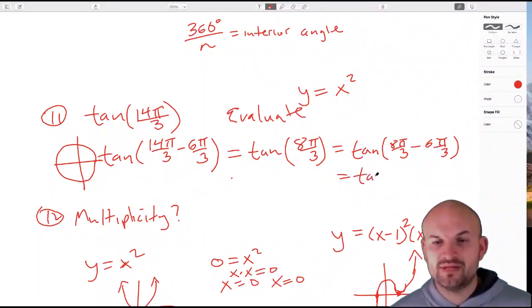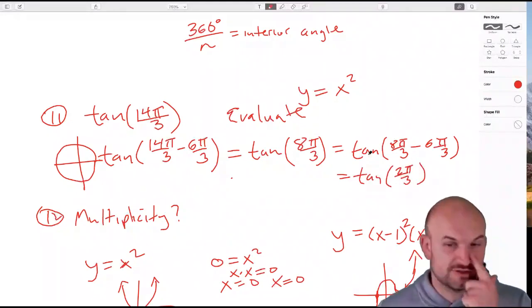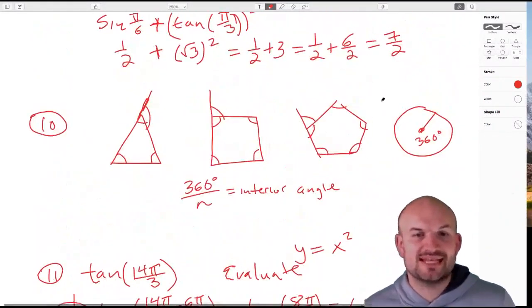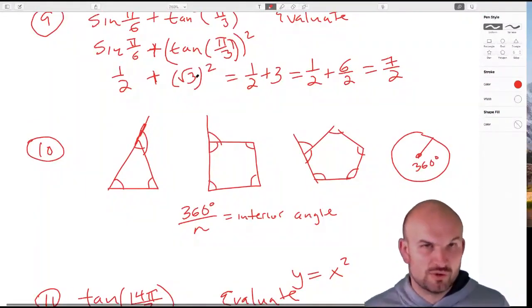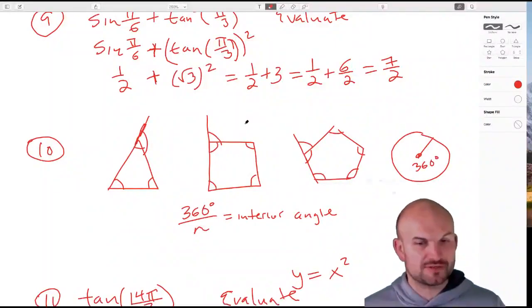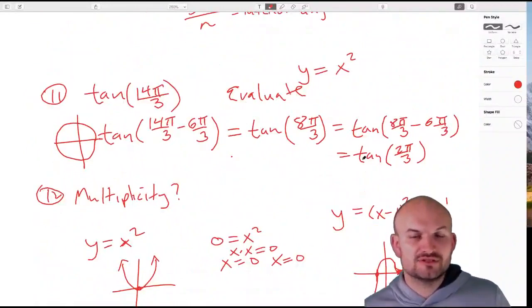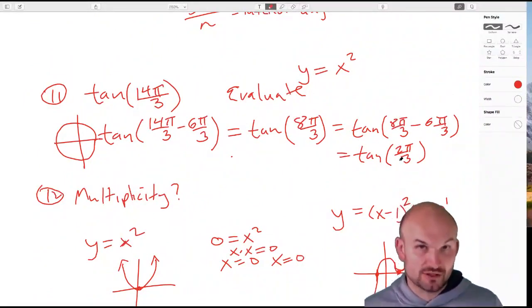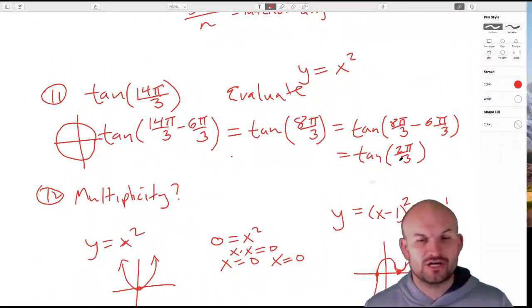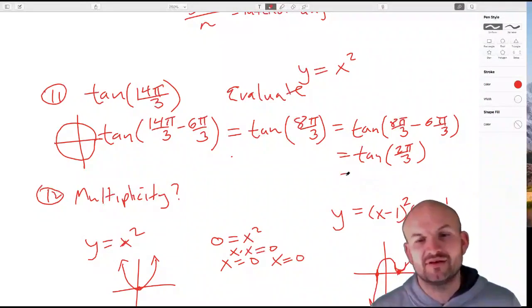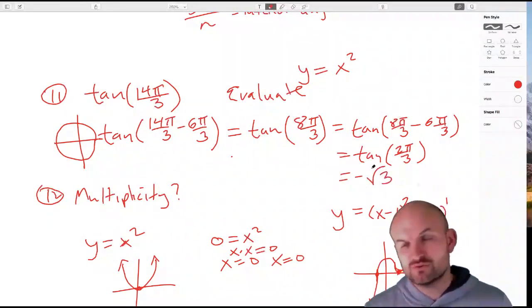Now this one's very interesting because the last problem had tangent of π/3, which we said was √3, but it was positive because π/3 was in the first quadrant. Well, now 2π/3 is going to have the same reference angle, which is π/3, but it's in the second quadrant, therefore it's going to be negative. So that equals -√3.